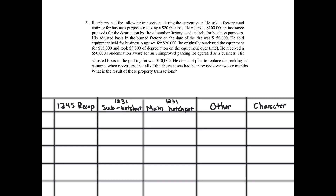He received $100,000 in insurance proceeds for the destruction by fire of another factory used entirely for business purposes. His adjusted basis in the burned factory on the date of the fire was $150,000. He sold equipment held for business purposes for $20,000. He originally purchased the equipment for $15,000 and took $9,000 of depreciation on the equipment over time.